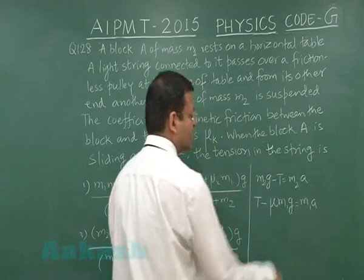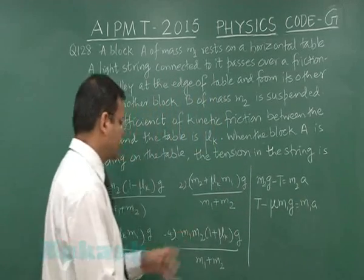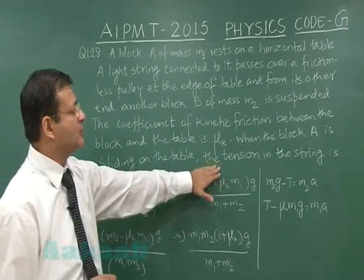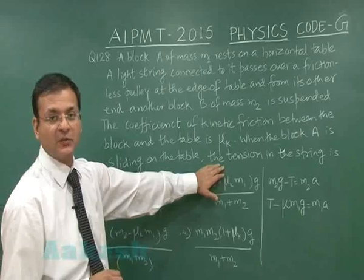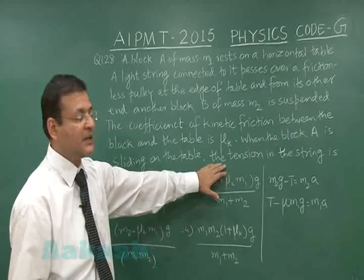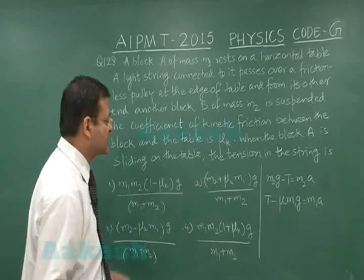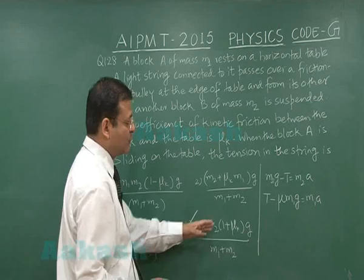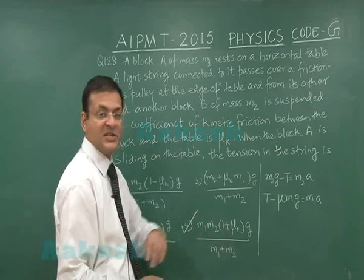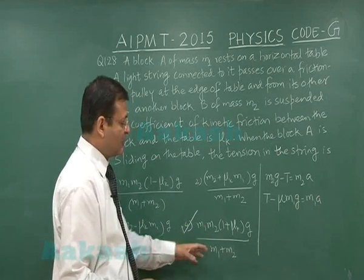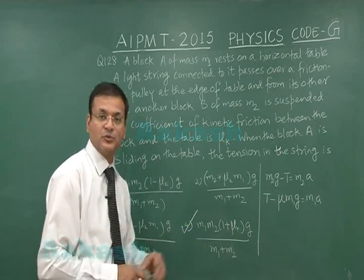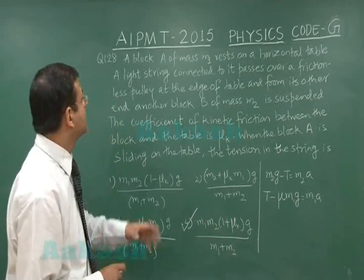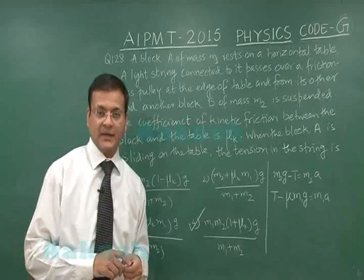If you solve these two equations simultaneously, you will get the value of tension in the string, which is what is demanded. The tension works out to M1·M2·(1 + mu_K)·G divided by (M1 + M2). This is the appropriate option for question number 128.